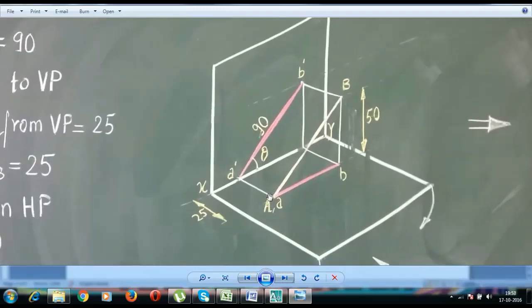Now this end point A is in the HP. You can clearly see that this is in the HP. And when you look at this end point from the front, you're going to see that its front view lies in the reference or XY line.